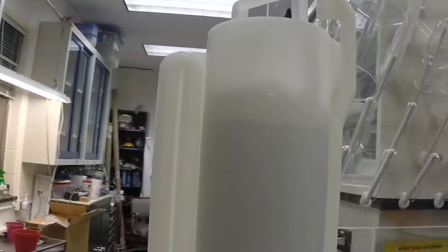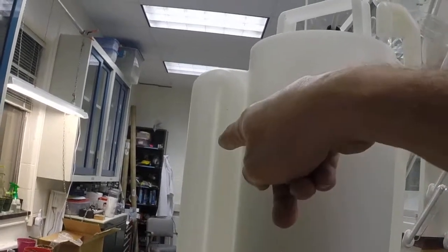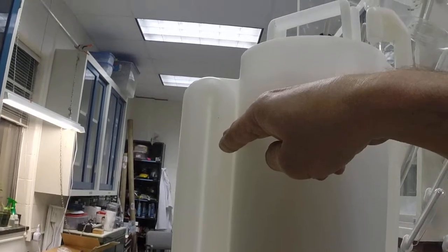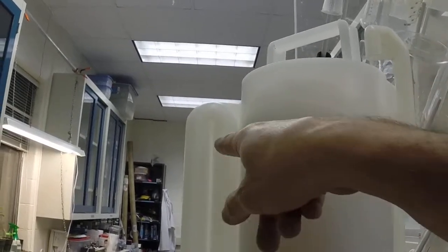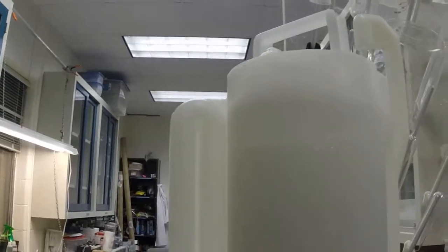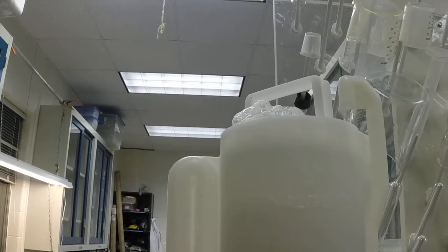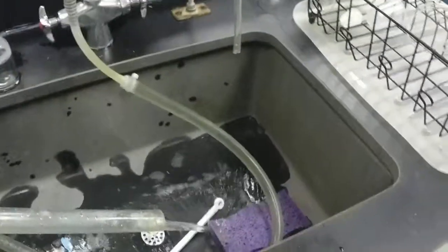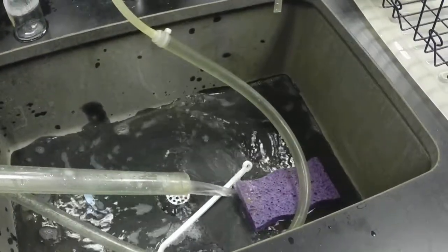You can see now the water level's gotten up to here and it's coming up this side tube. Once it gets up to here it looks like it's going to come out the top but instead it actually creates the siphon. Once that siphon is created you'll see that it'll start to come out down here and it'll come out pretty readily as you'll see in a minute.